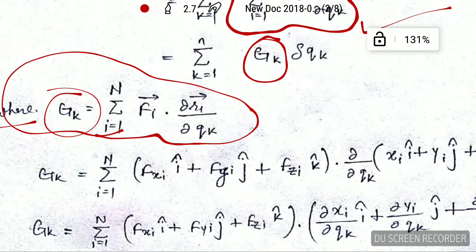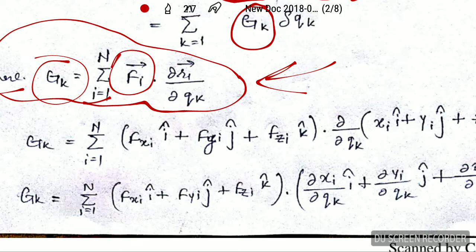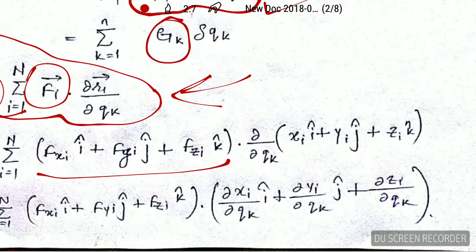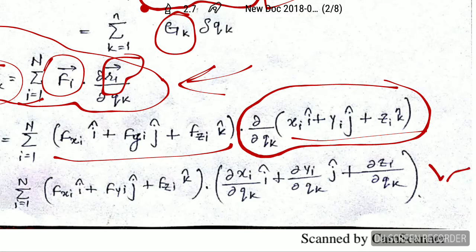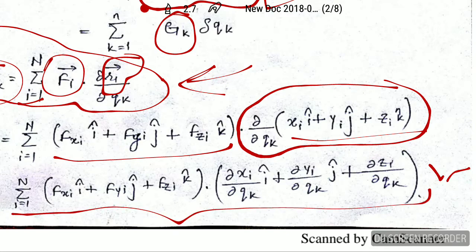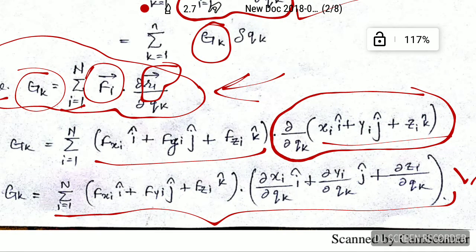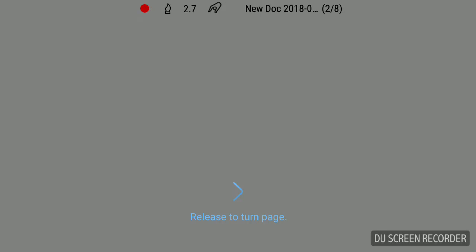Now I am going to simplify this expression. I have written the value of the force vector, then the value of the r_i vector, and then I distribute the operator del over del q_k inside, giving this expression. You can see there is a dot product between the forces and the derivative of the displacement. We can easily evaluate this dot product — let's go to the next page.